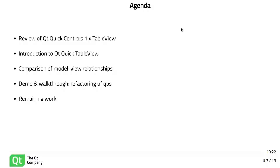The agenda for this session: we'll first talk about the Qt Quick Controls 1 TableView and the reasons why we thought we needed to rewrite it, then an introduction to the new Qt Quick TableView, which is the replacement. We'll talk about the relationships between the models and views, then I'll do a demo and walkthrough of an existing application called QPS, which I've refactored to use the new Qt Quick TableView, and then some things that are still left to be done.